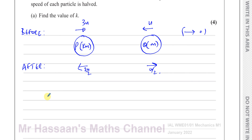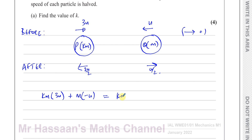The sum of momentum before the collision: for P it's KM times positive 3U, plus for Q it's M times negative U. This equals the total momentum after the collision. After the collision, the direction of P has been reversed and its speed is halved, so it's KM times minus 3U over 2. For Q, it's M times positive U over 2.